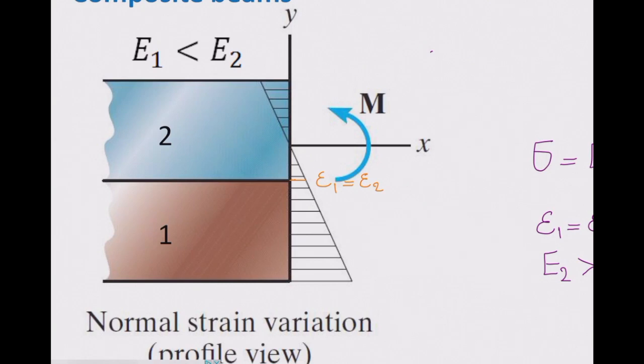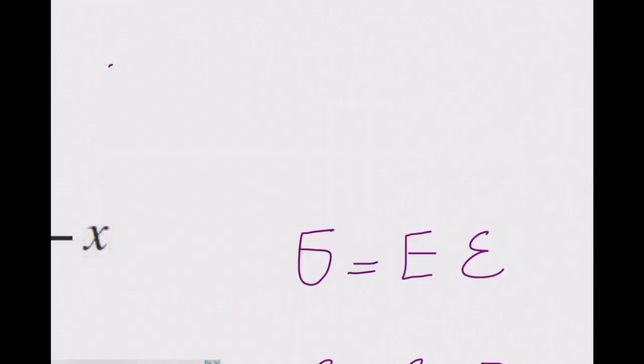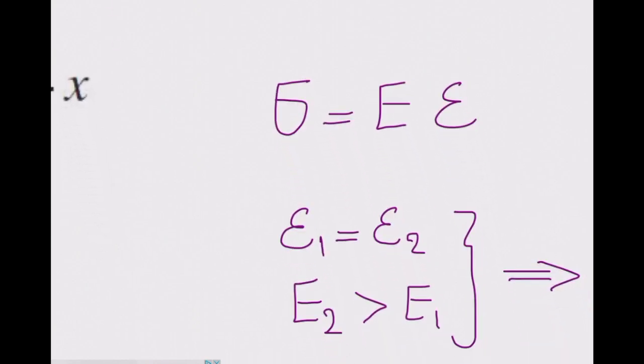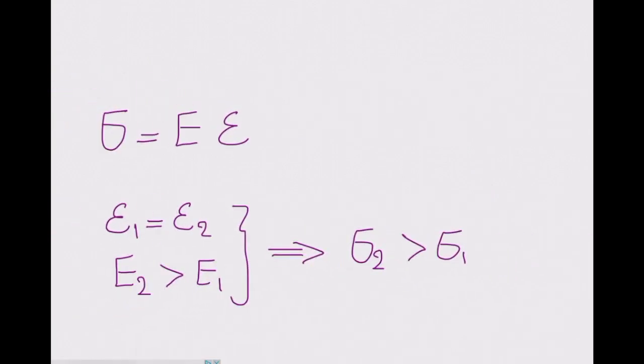Now, what about the stresses? Can I say that stress values are similar at that point? Let's see. Stress sigma equals E times epsilon. Epsilon is the same at that point, but modulus of elasticity is different. That means stress in the second material is larger than stress in the first material. Even though we have the same strain, the stresses are different.